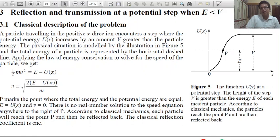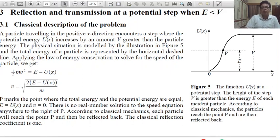At the point P, E and V are equal. So E equals U(x), so v equals 0. V equals 0 — there is no real solution to the speed equation anywhere to the right of P. According to classical mechanics, each particle will reach the point P and then be reflected back. The classical reflection is 100%.